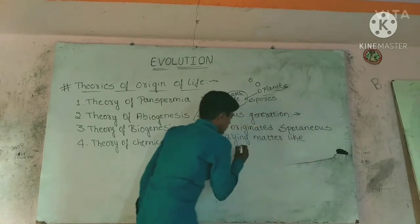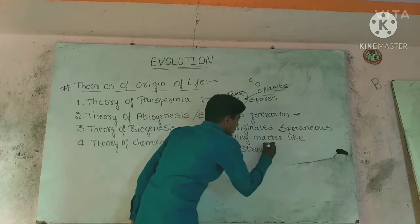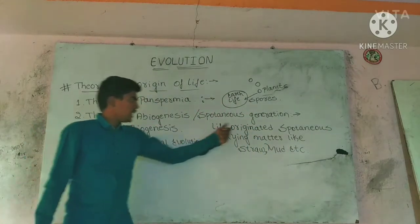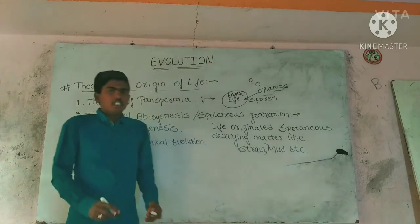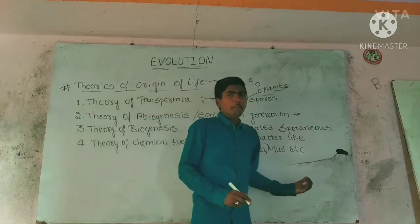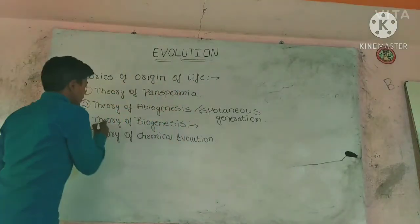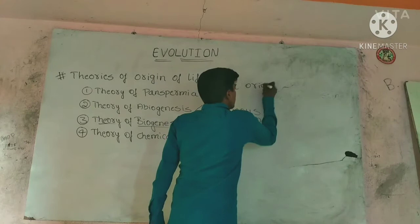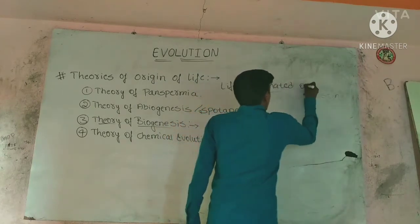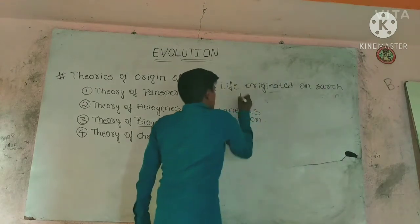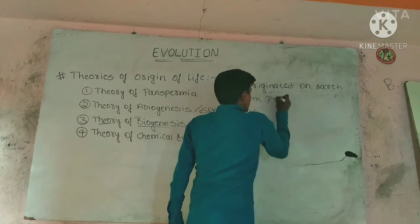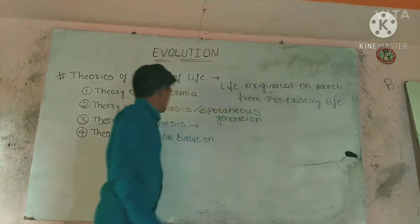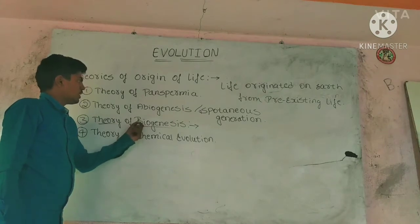According to this theory, life could originate from non-living material such as straw and mud. Many people believed this theory, but many people did not. The Theory of Biogenesis states that life originated on earth from pre-existing life.